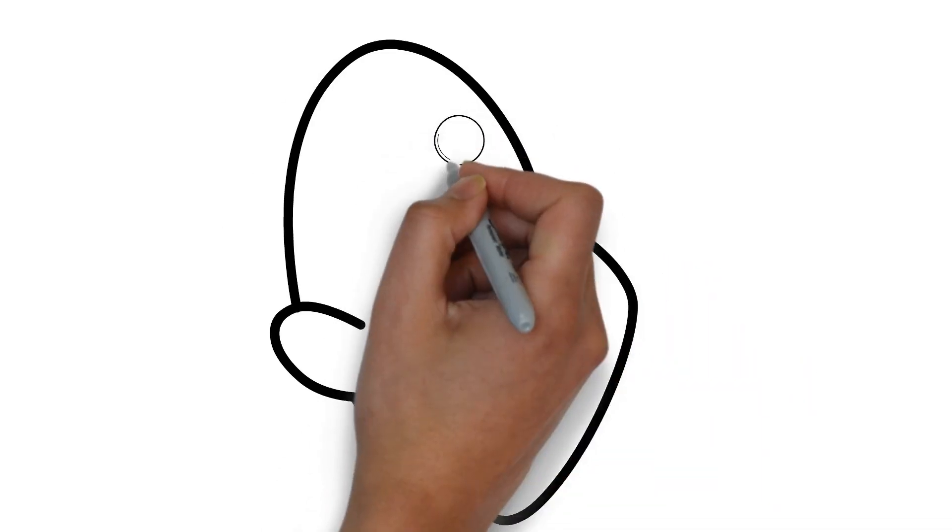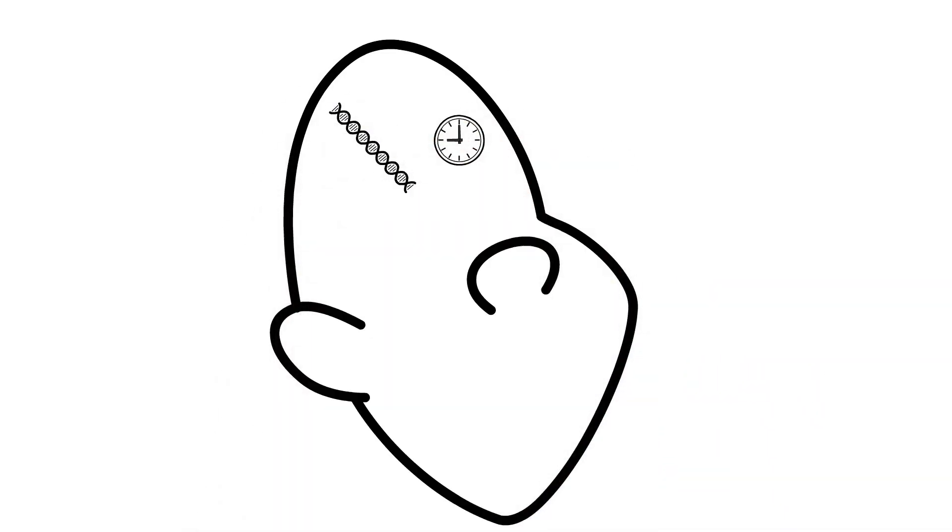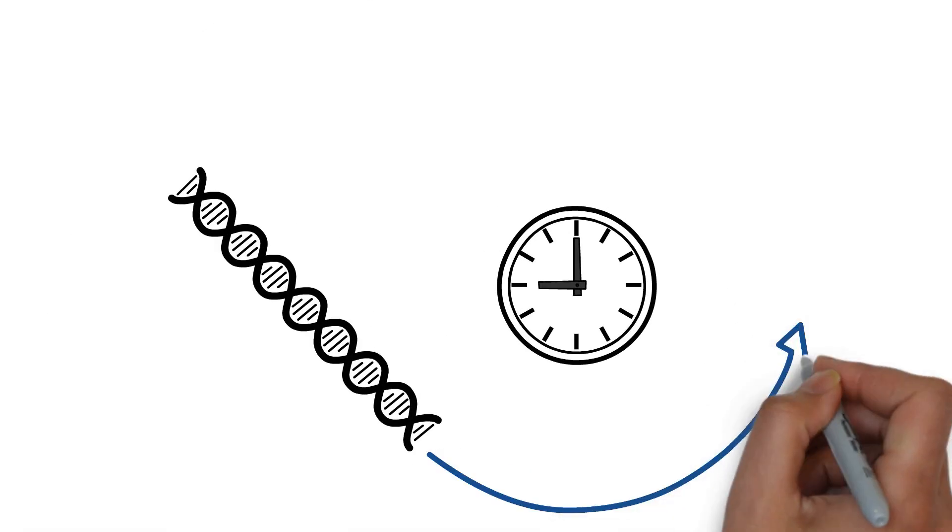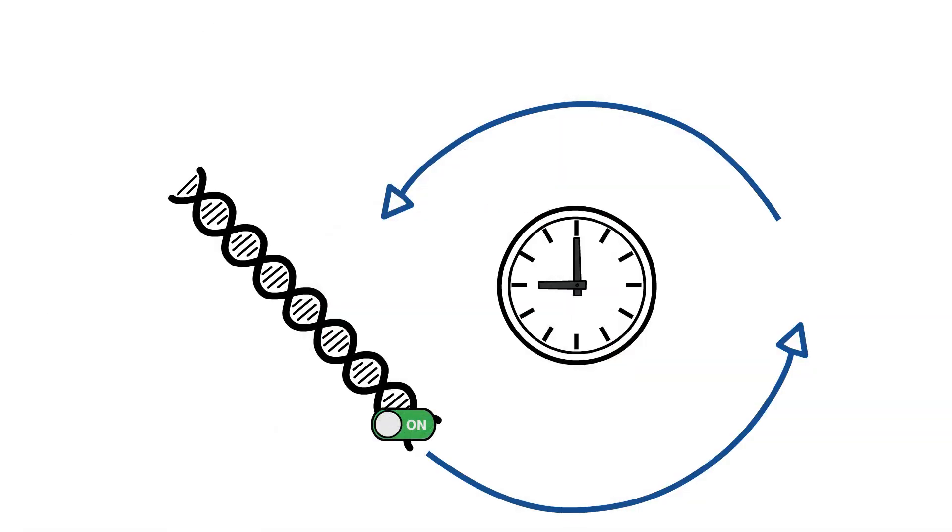We all have a master clock located in our brains. This pre-programmed circadian rhythm is activated when our eyes perceive the blue light part of the light spectrum.